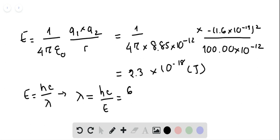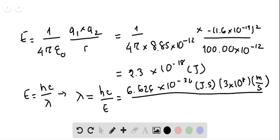h is Planck's constant which is 6.626 × 10⁻³⁴ joule-seconds, and c is 3 × 10⁸ meters per second. You can see these units cancel, and E in this case is 2.3 × 10⁻¹⁸ joules.